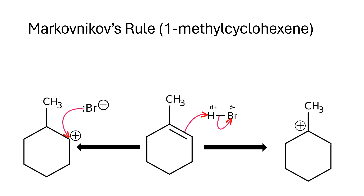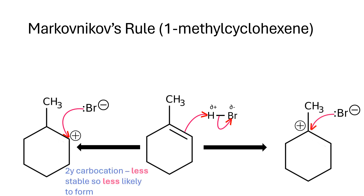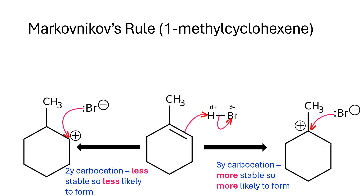So let's do the mechanism. The bromide ion comes in, and the lone pair on the bromide ion has a curly arrow drawn from it, starting between the two electrons, pointing at the carbon atom that carries the positive charge. We do the same thing on the other side. On the left-hand side, it's a secondary carbocation, so it's less stable and less likely to form.